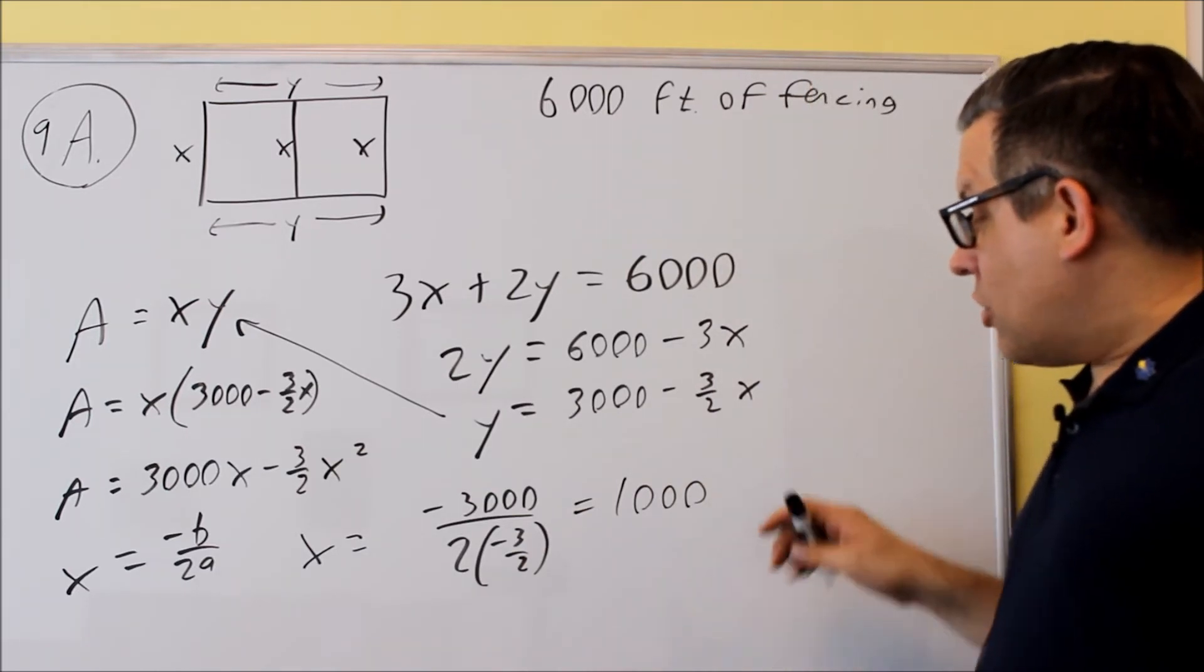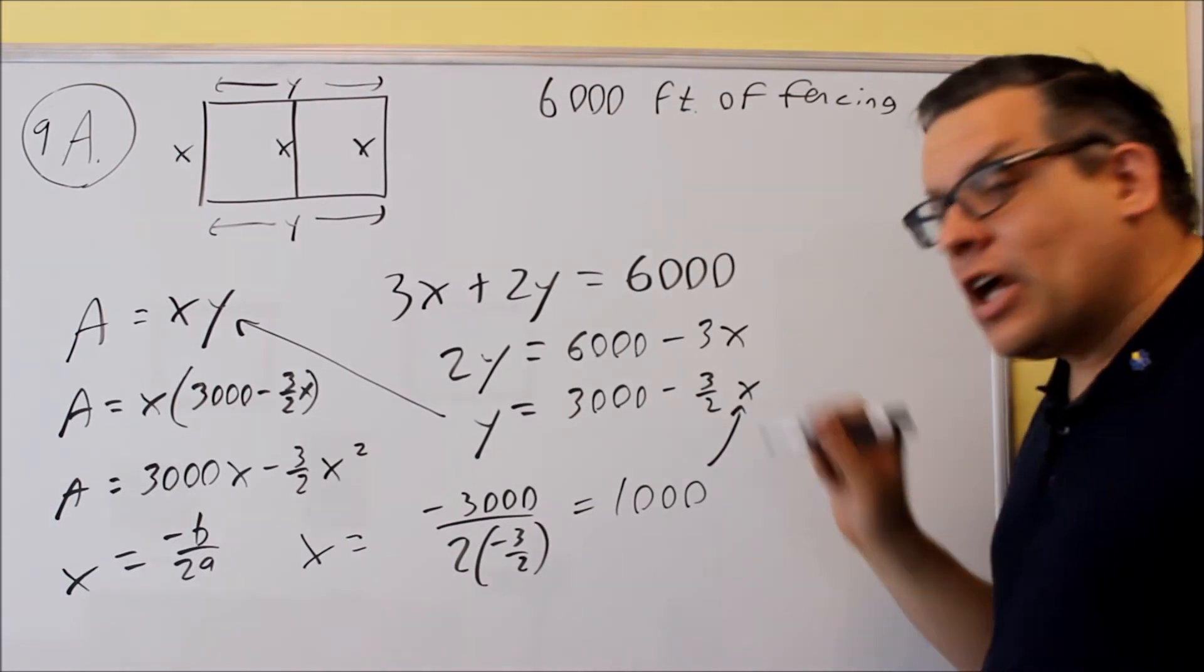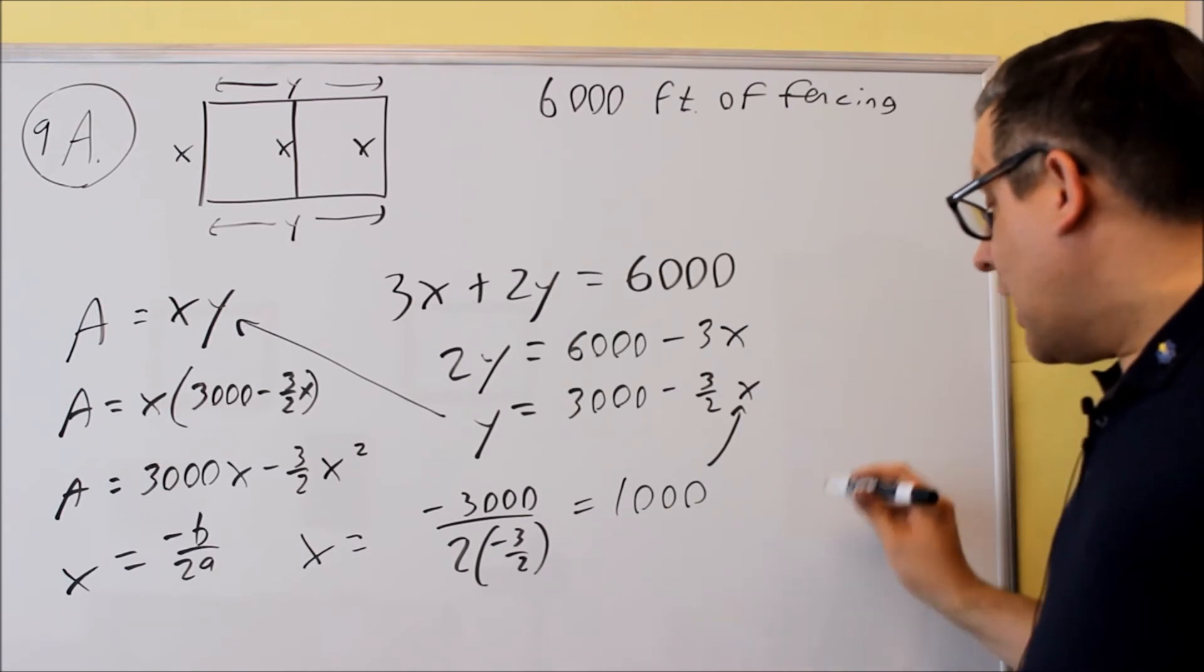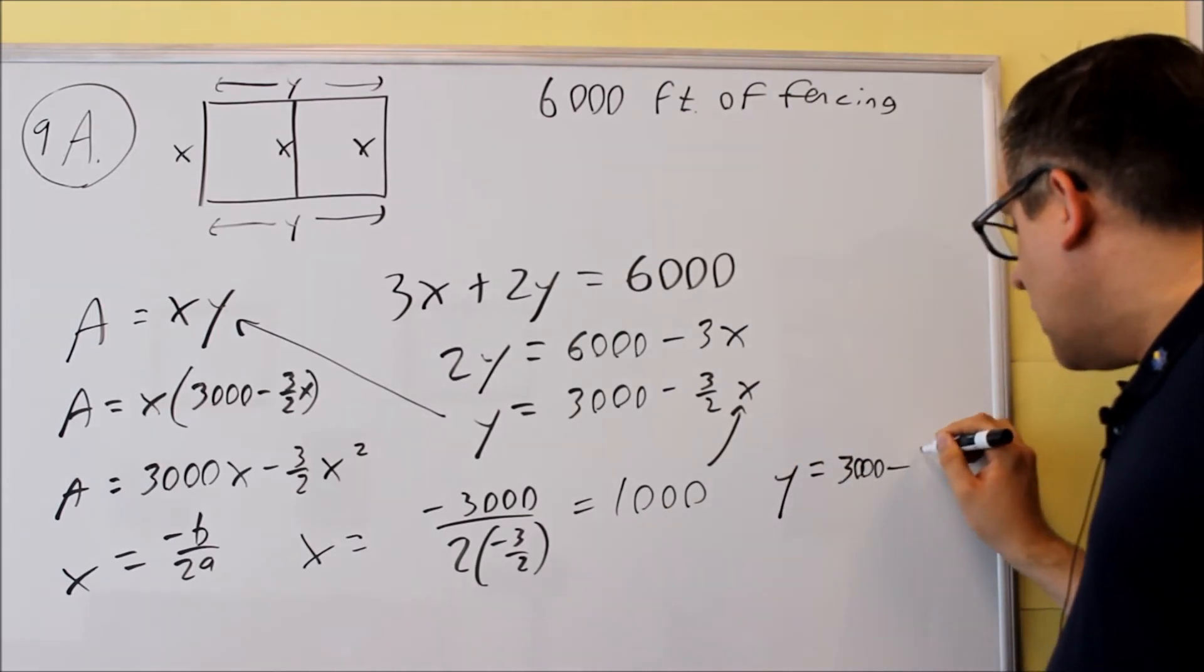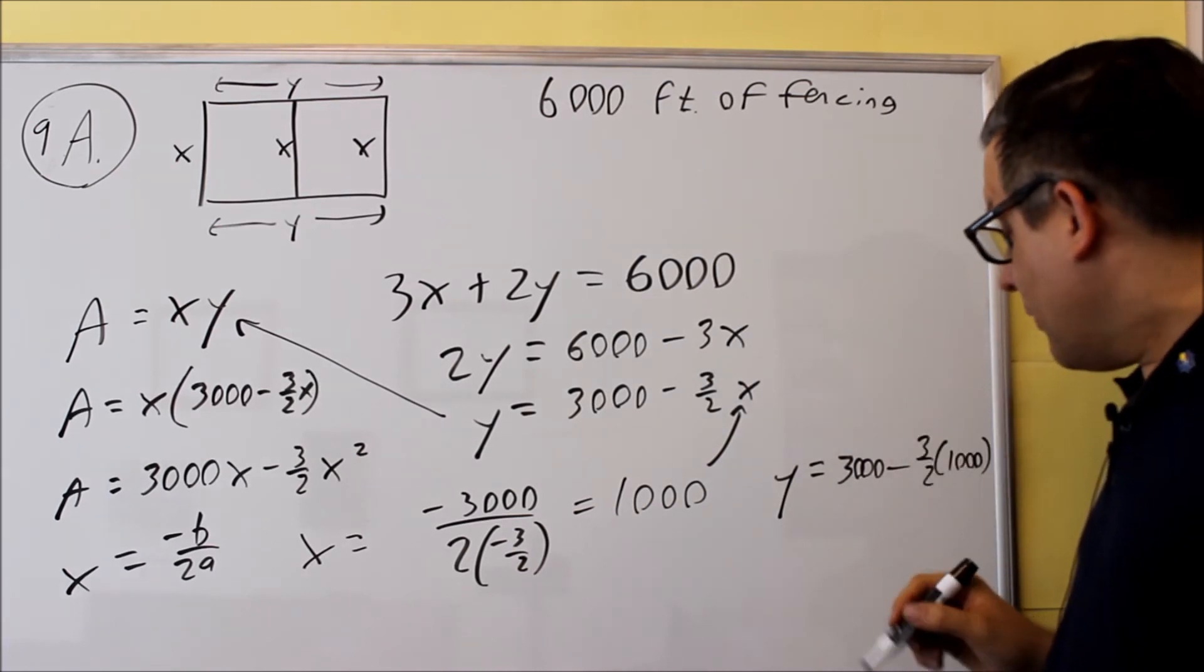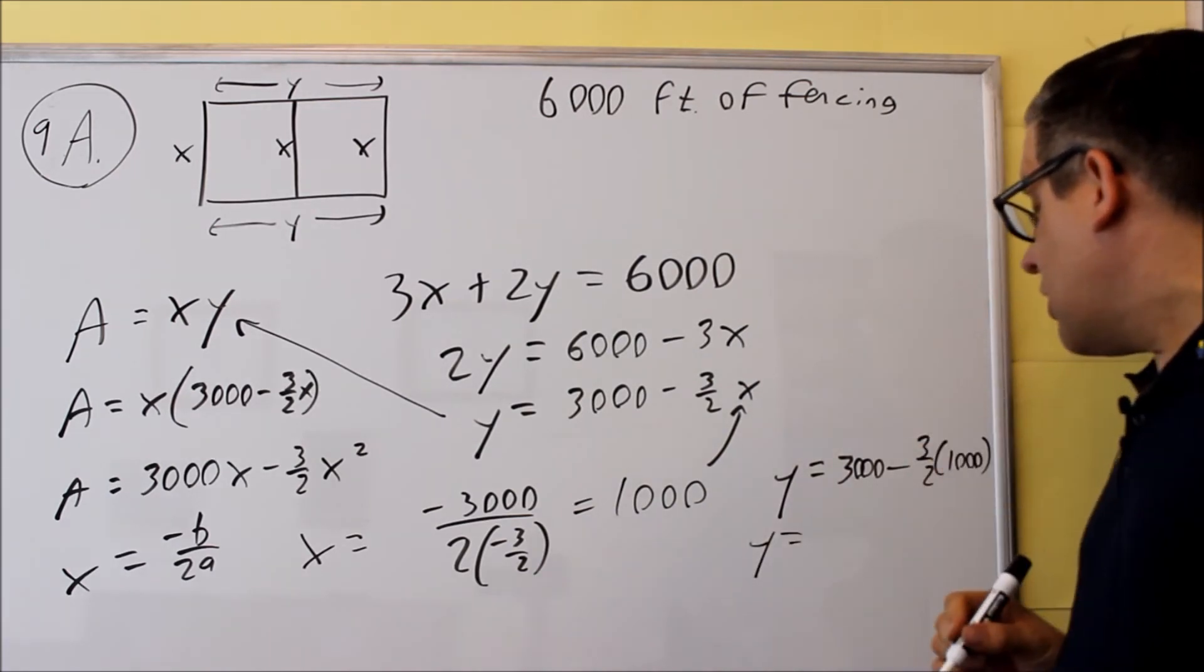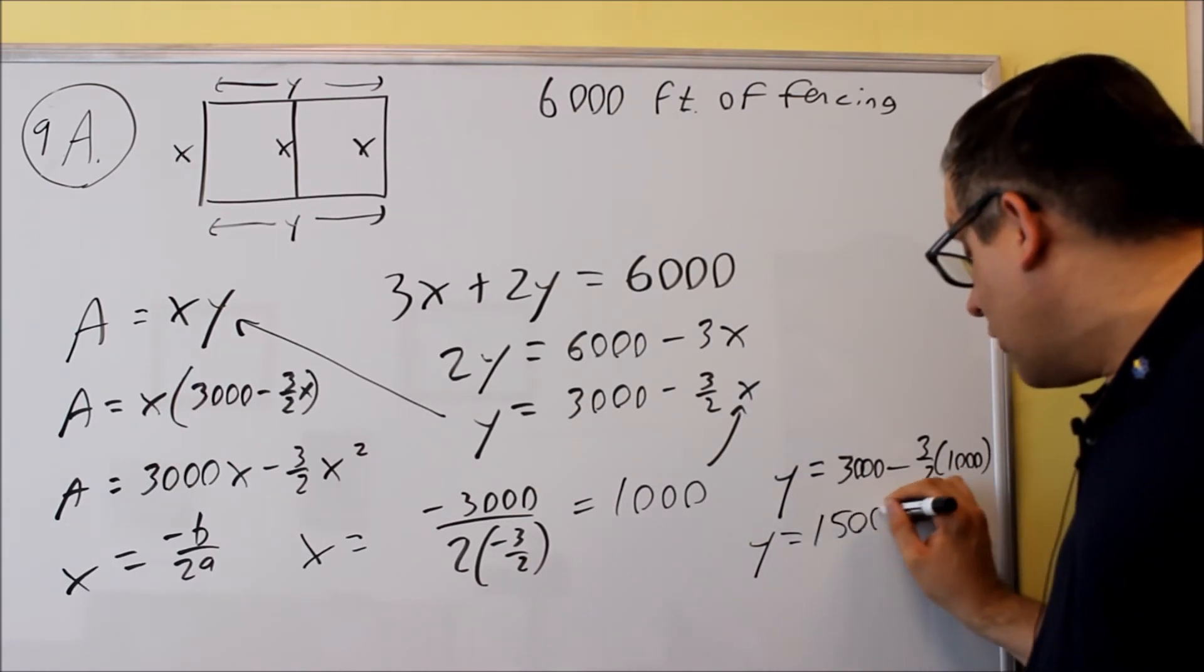Now the next thing you can do is put that into here and then you can find out what the y value is. So if I do that, I have y equals 3,000 minus 3 halves times 1,000. I'm putting that into this formula right here. When I multiply that out I'll get 3,000 minus 1,500. I'm going to get 1,500 for the answer.